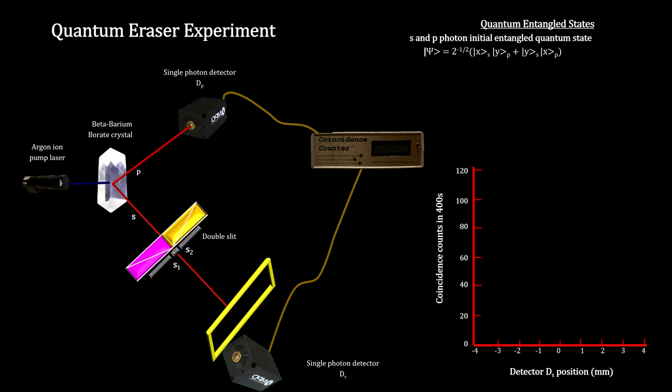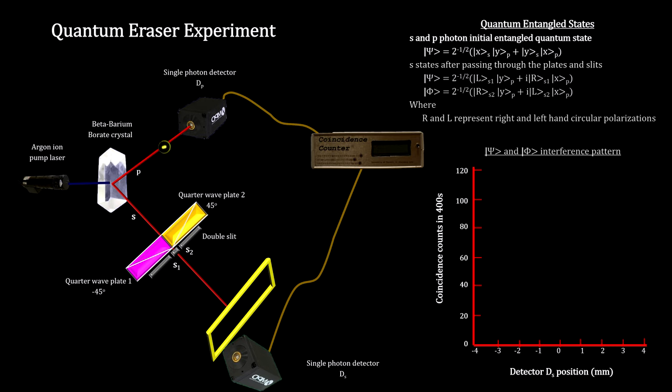Like we did to provide which-way information in the double-slit experiment, we put quarter-wave plates in front of each slit. Measuring the polarization at the detector tells us which slit the photon went through.